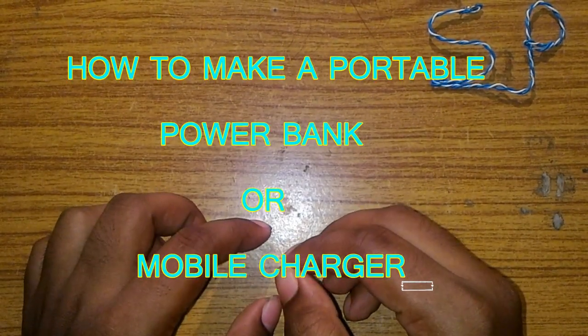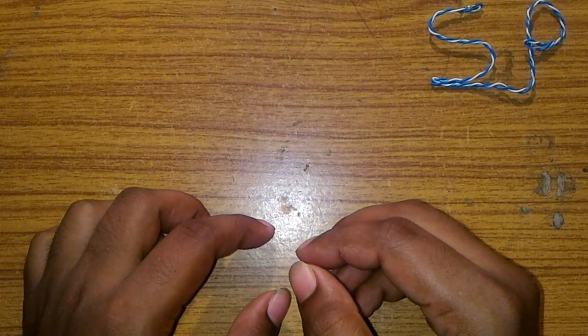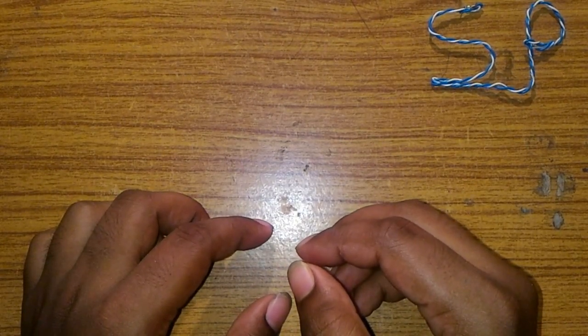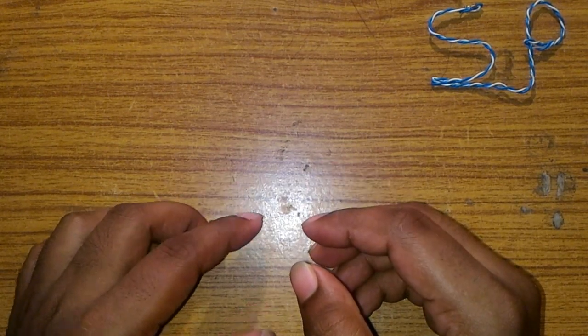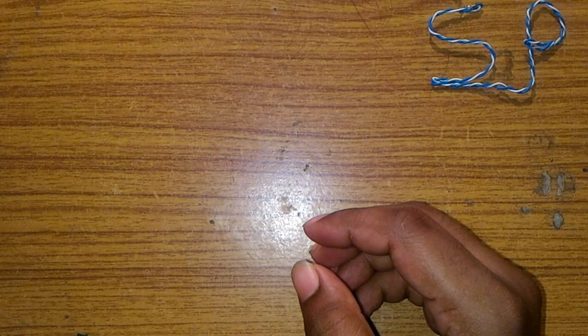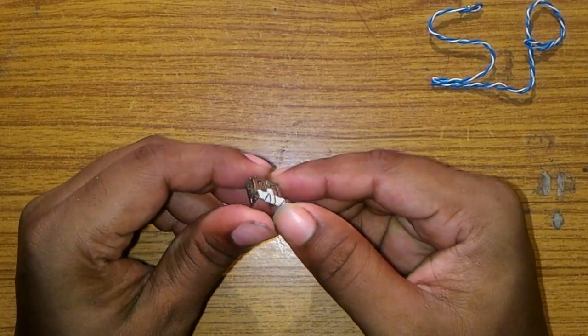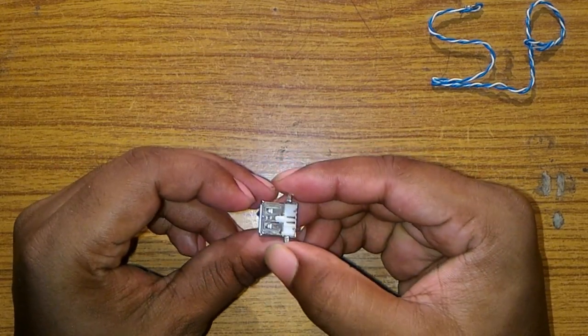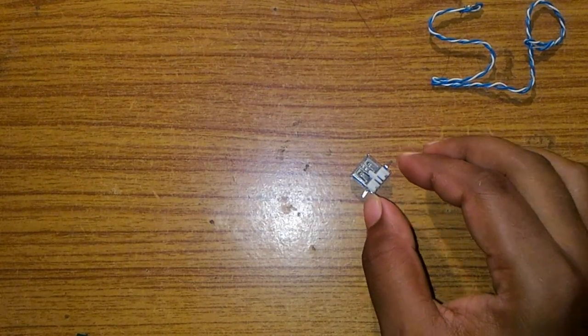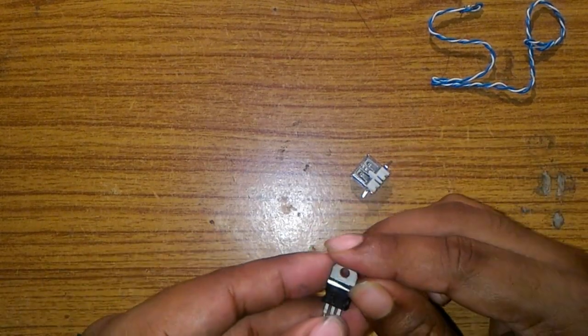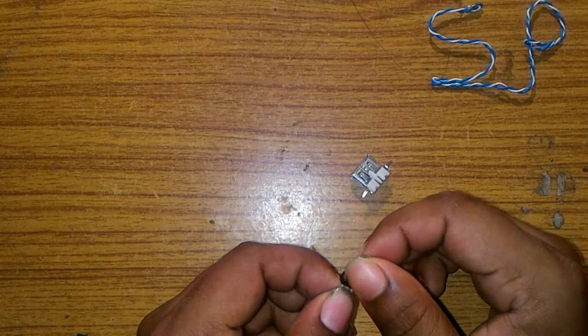Hello friends, today I am going to show you how to make a portable power bank or mobile charger. For that, the required things are: firstly, a female USB port, then an LM7805 IC which is a 5 volt voltage regulator.